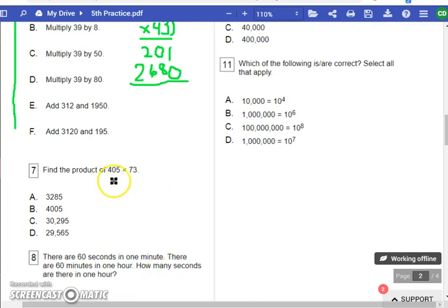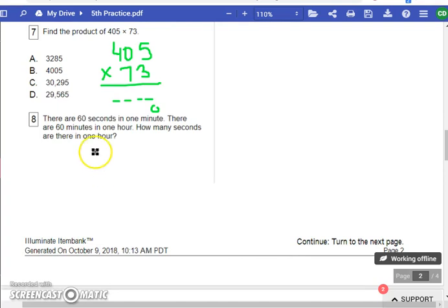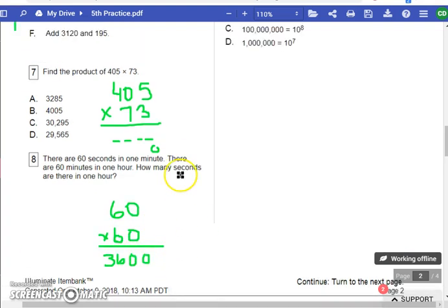Find the product of 405 times 73. I'm not going to solve that out. I would write it out. A lot of times students forget that second zero in the second addend. So don't forget that, and make sure you add everything up, make sure you carry everything. There are 60 seconds in one minute, there are 60 minutes in one hour. How many seconds are there in one hour? Really very easy. 60 times 60 would help you figure that out. And if you know that six times six is 36, all you have to do is add those two zeros and there's your answer.